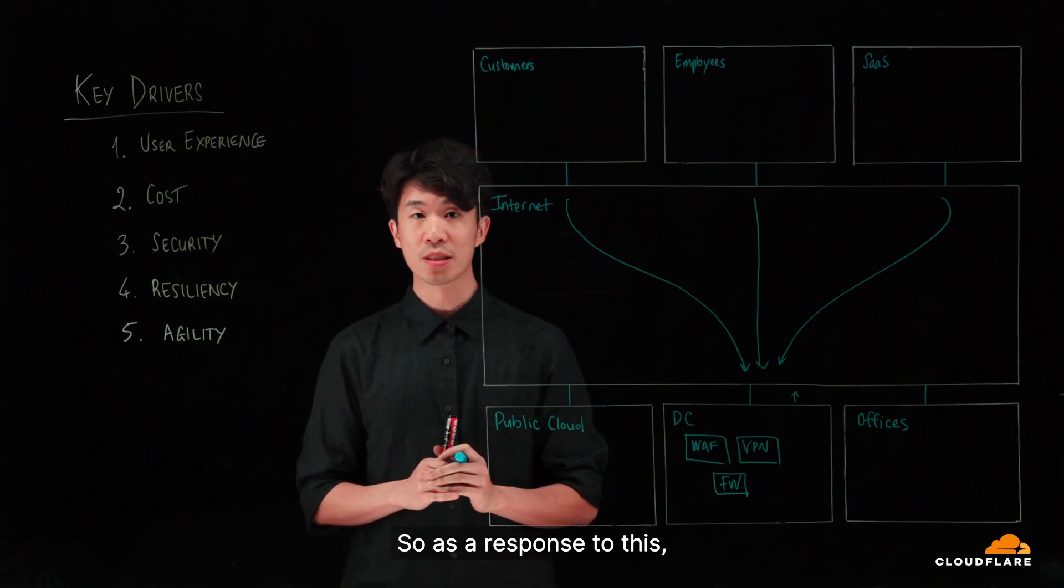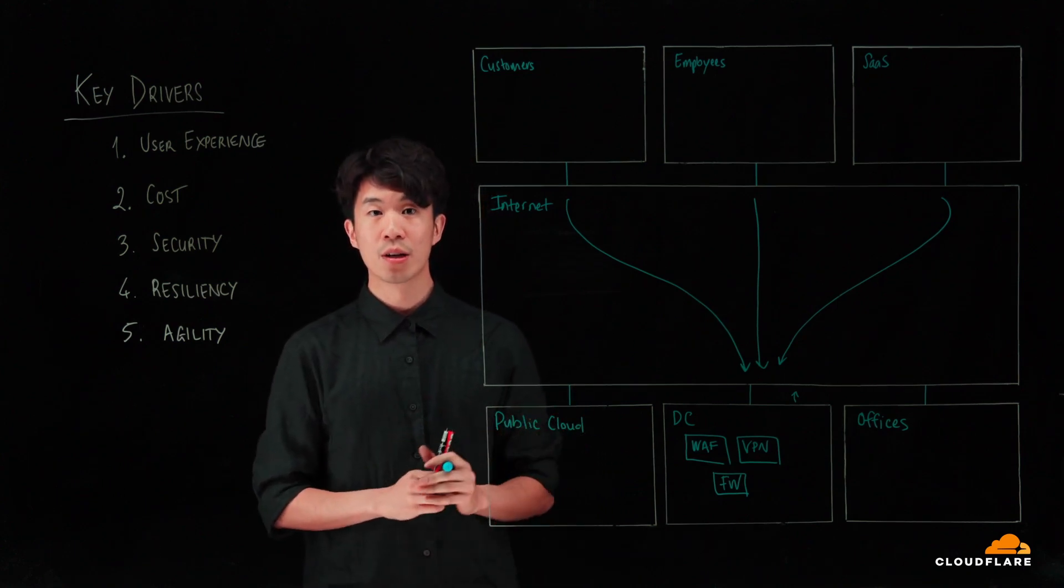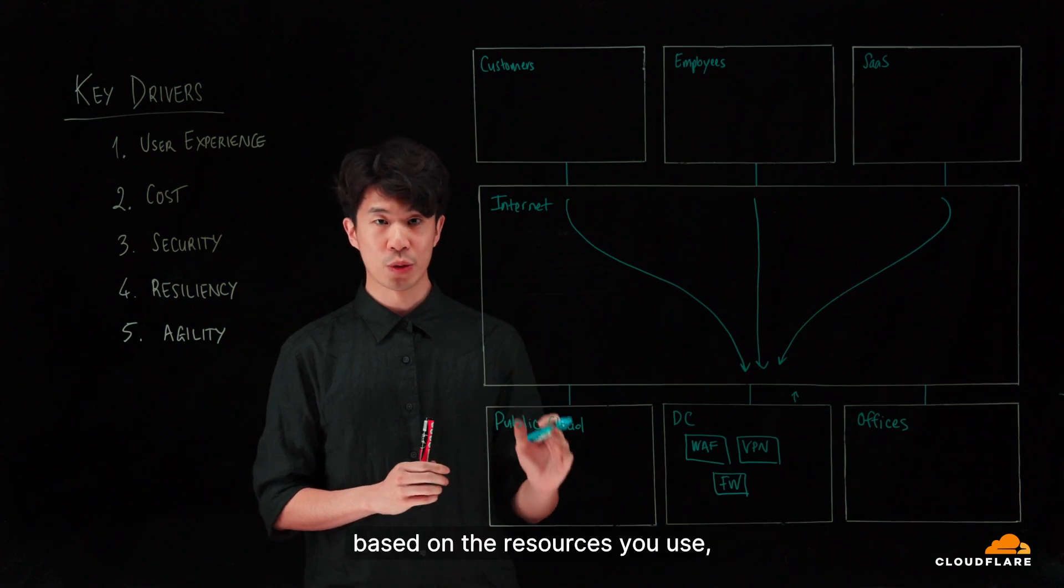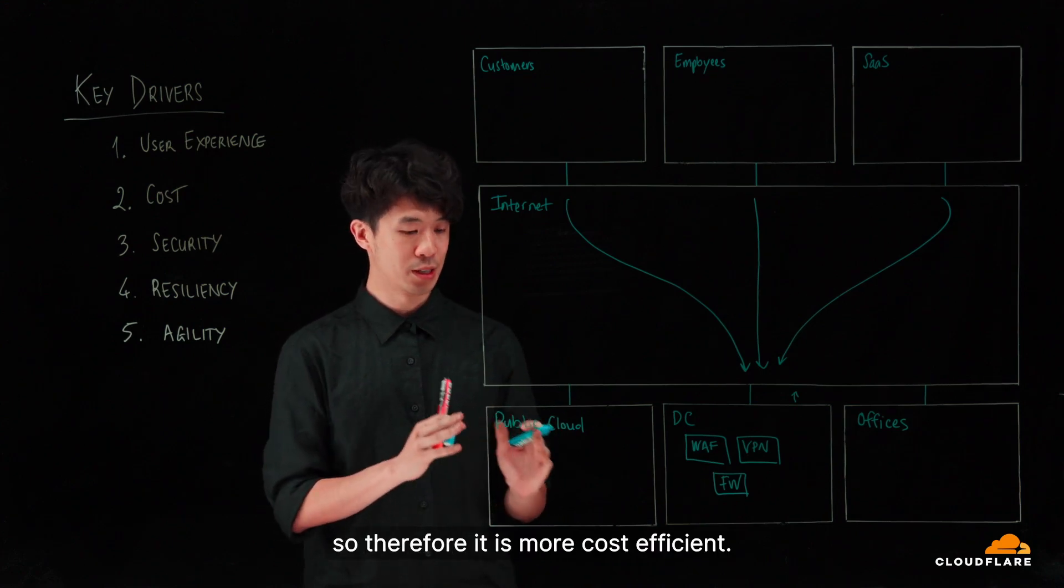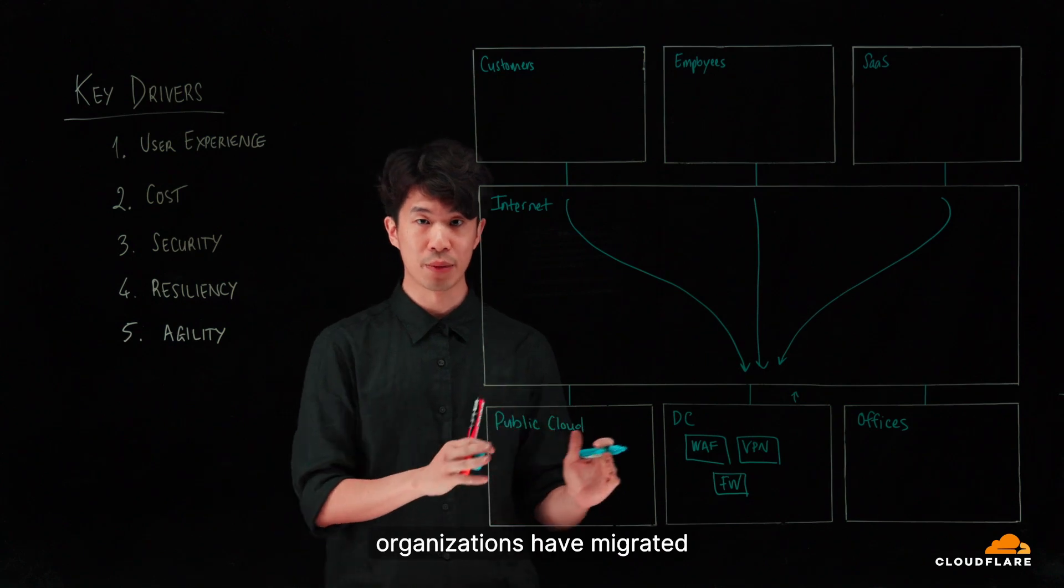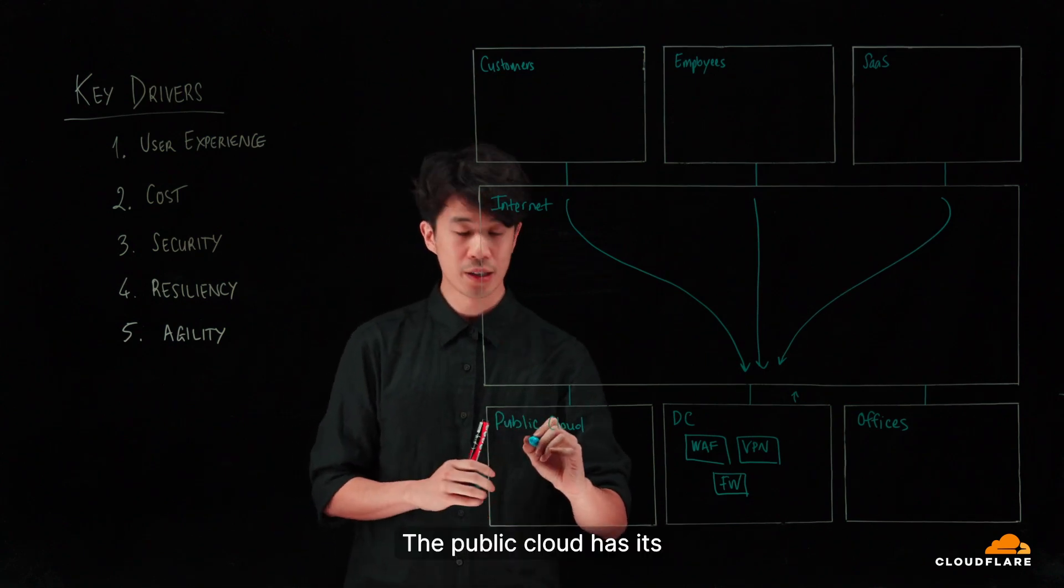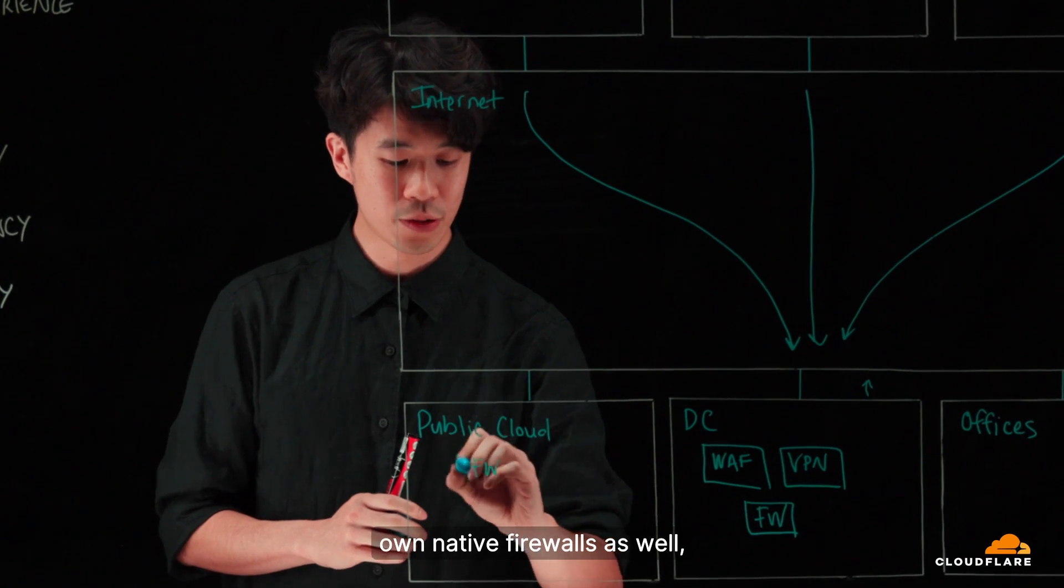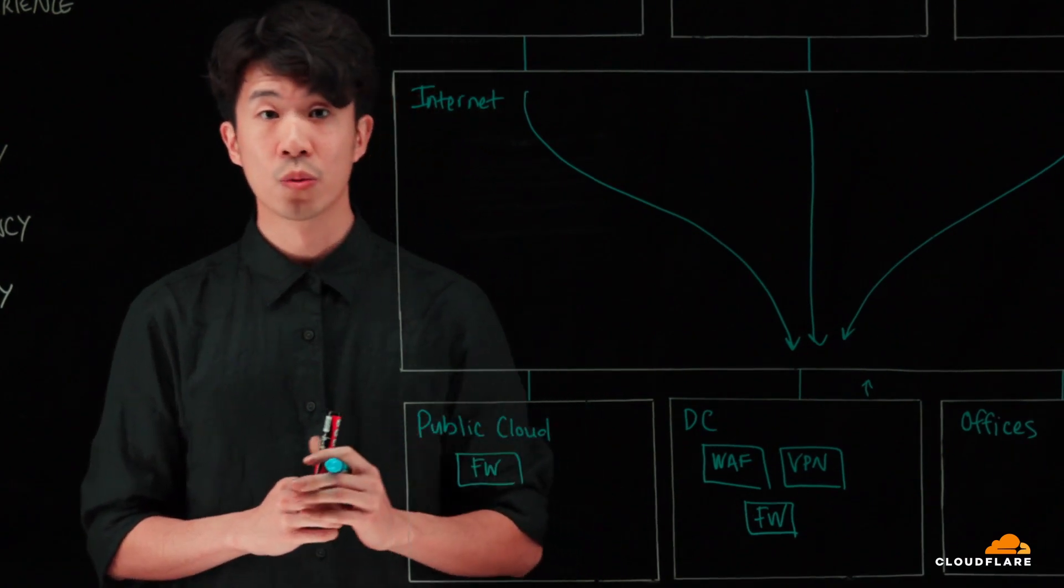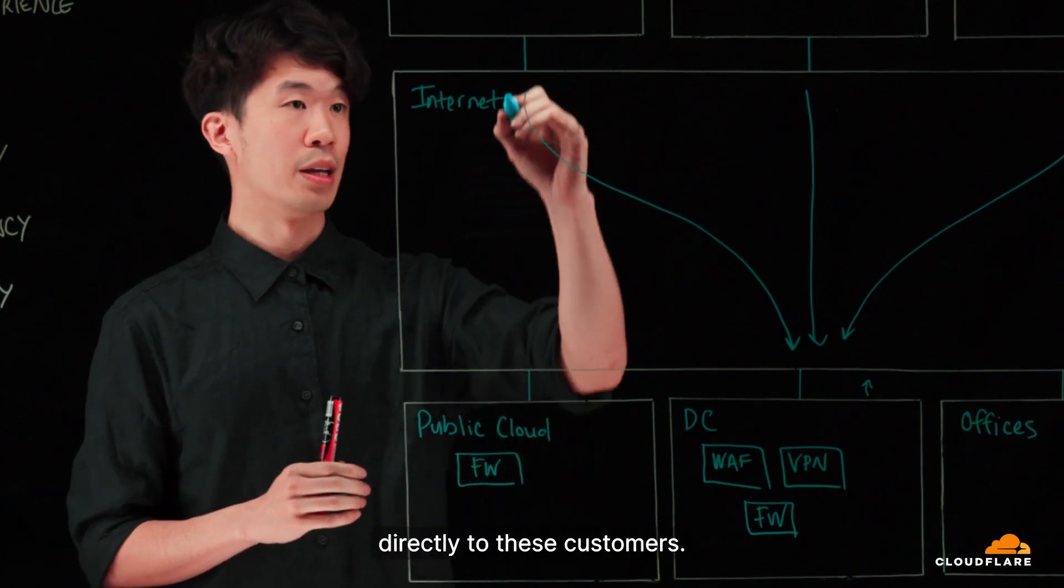So as a response to this, what we saw our companies do is start to leverage the public cloud. You only pay by the hour based on the resources you use, so therefore it is more cost efficient. What we've seen from this is organizations have migrated their workloads to the cloud for what they can. The public cloud has its own native firewalls as well, which are lower costs and so now we're able to expose our workloads directly to these customers.